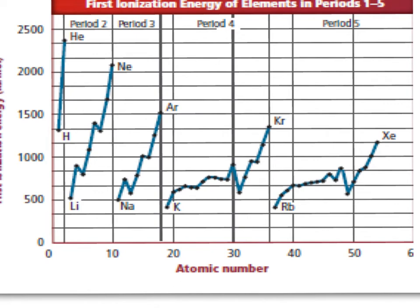This chart shows a single blue line connecting each period. As you go across period 1 (hydrogen and helium), ionization energy goes up. As you go across period 2 from lithium to neon, ionization energy overall increases — there are a couple of dips we'd discuss in more advanced chemistry related to orbital structure, but the overall trend increases. You also notice that going down family 1 — hydrogen, lithium, sodium, potassium, rubidium — the ionization energy gets lower and lower as the atoms get bigger and bigger.